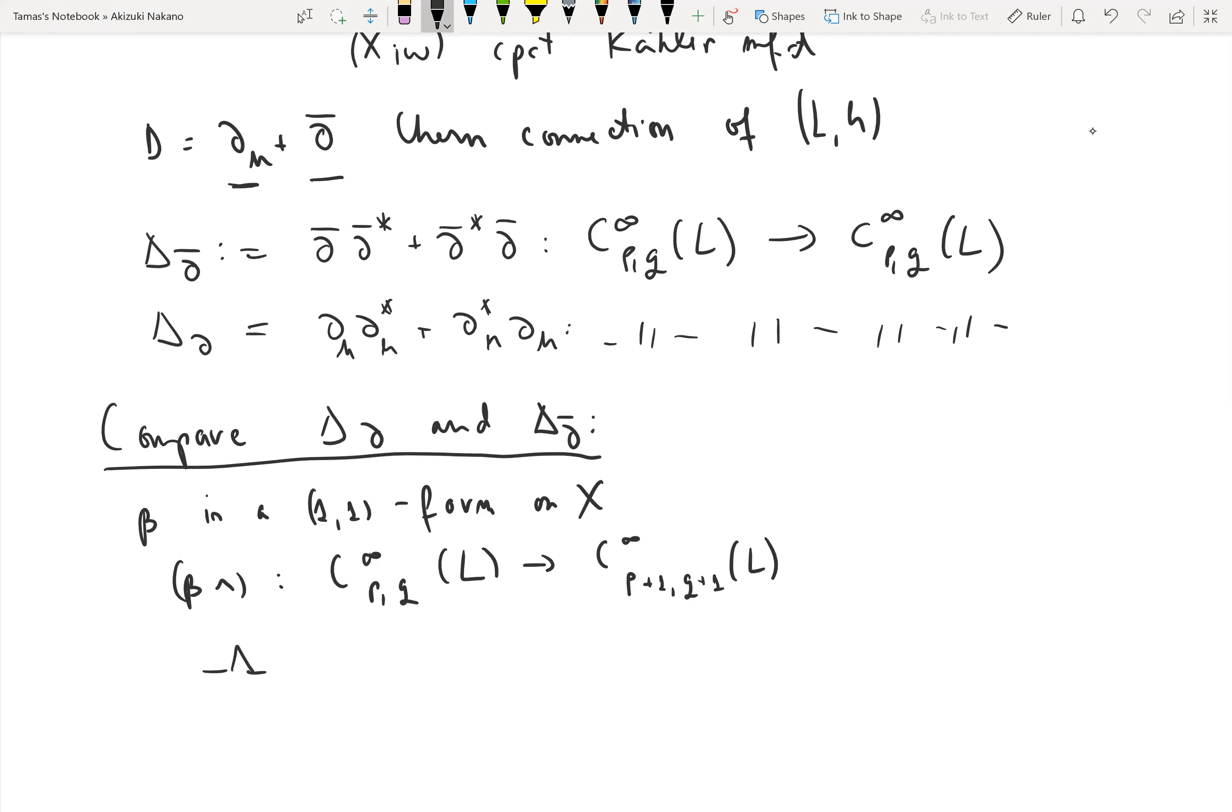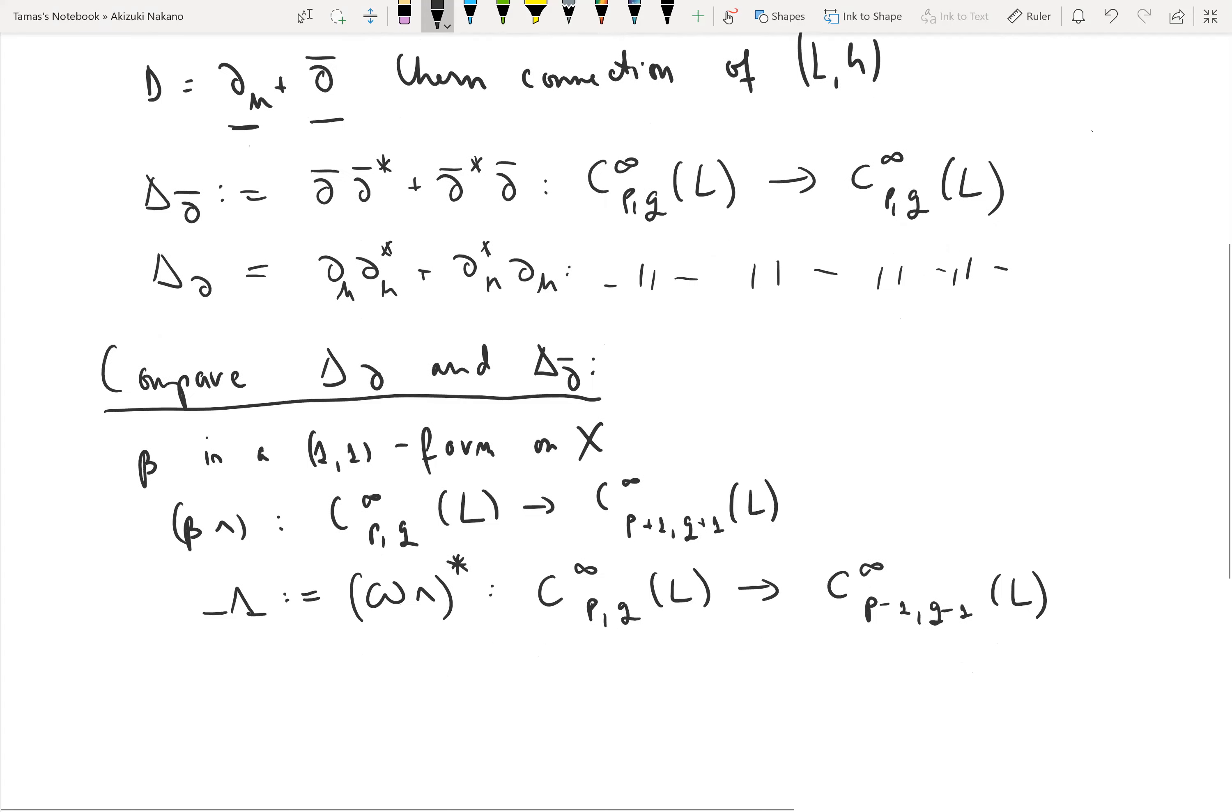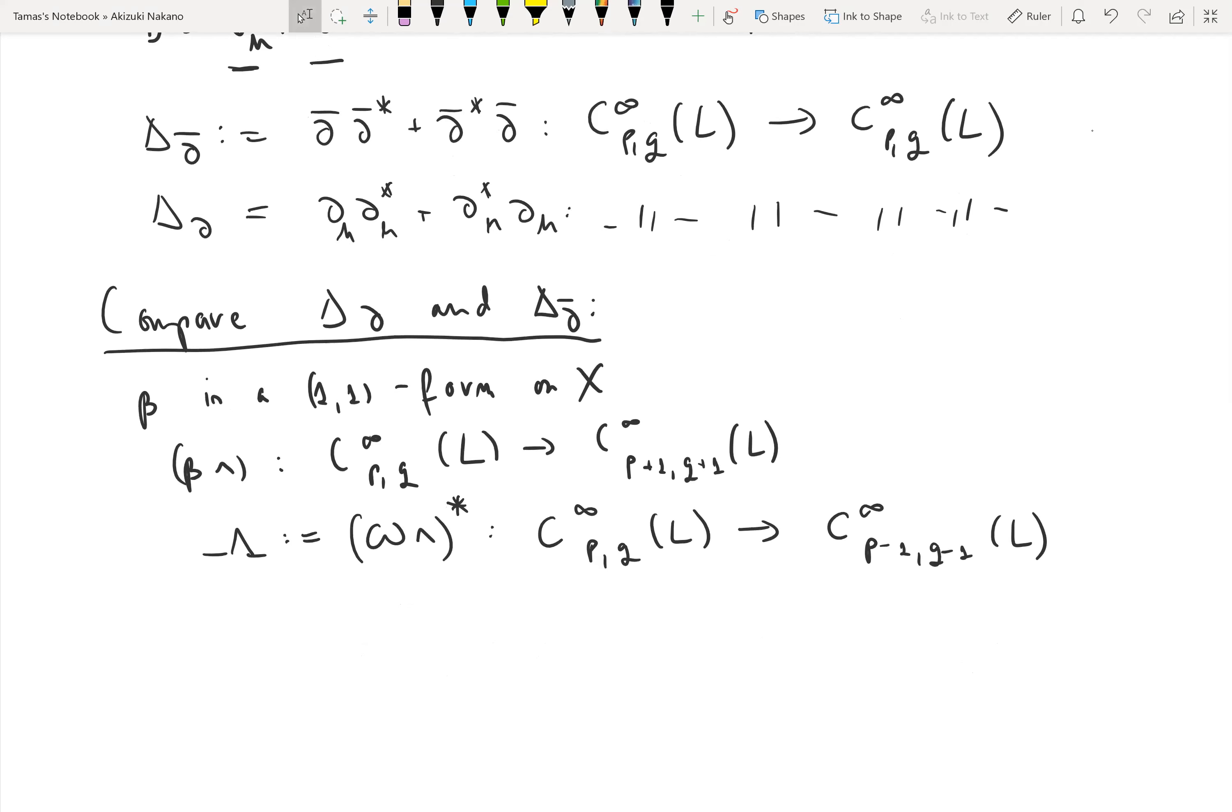A very special case will be when beta is the same as the underlying Kähler form omega. In that case, by lambda we will denote its adjoint, so this is wedging by omega adjoint, which goes from p,q forms with values in L to (p-1,q-1) forms.